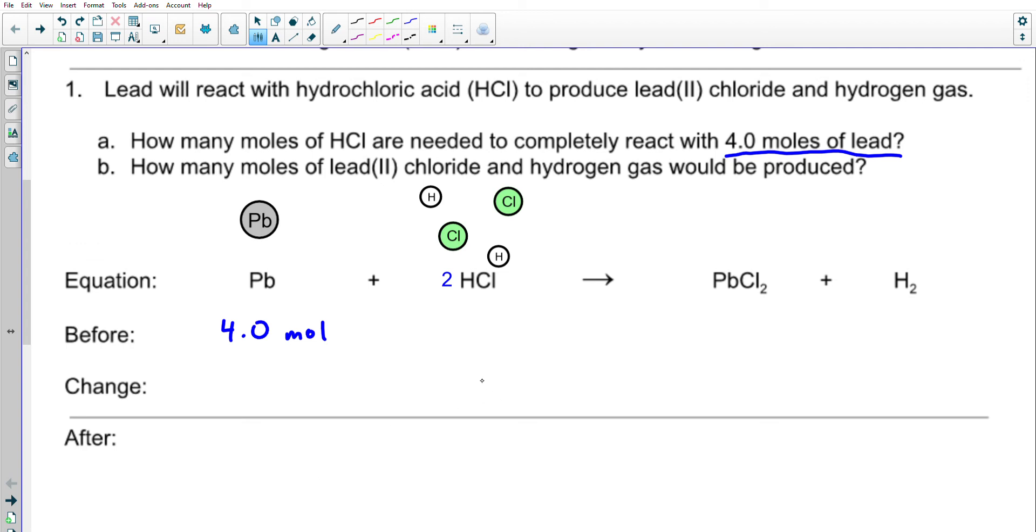This one's pretty simple. We've got implied coefficients of 1, 1, and 1 here. If I have 4 moles of lead, I'm going to need it to react with twice as many moles of HCl. Using that 1 to 2 ratio, I'm going to need 8 moles of HCl.